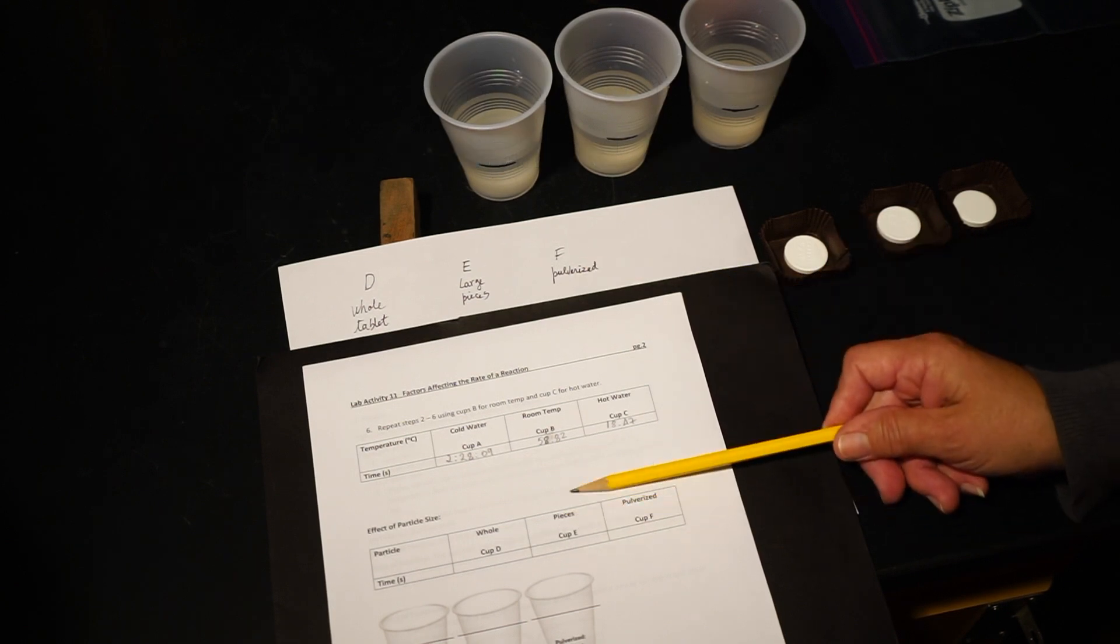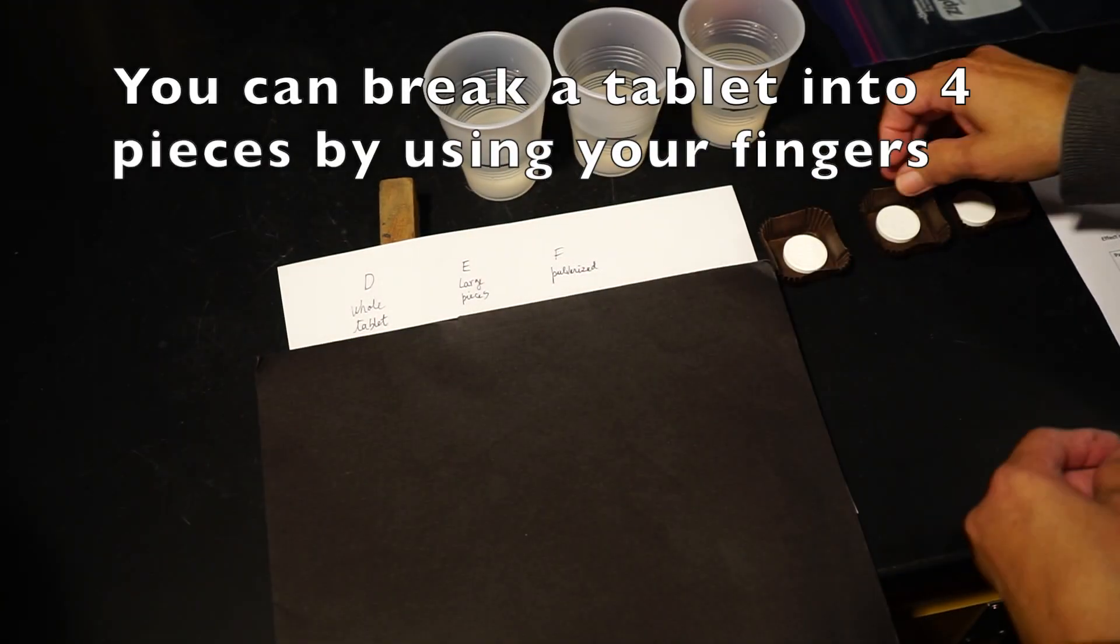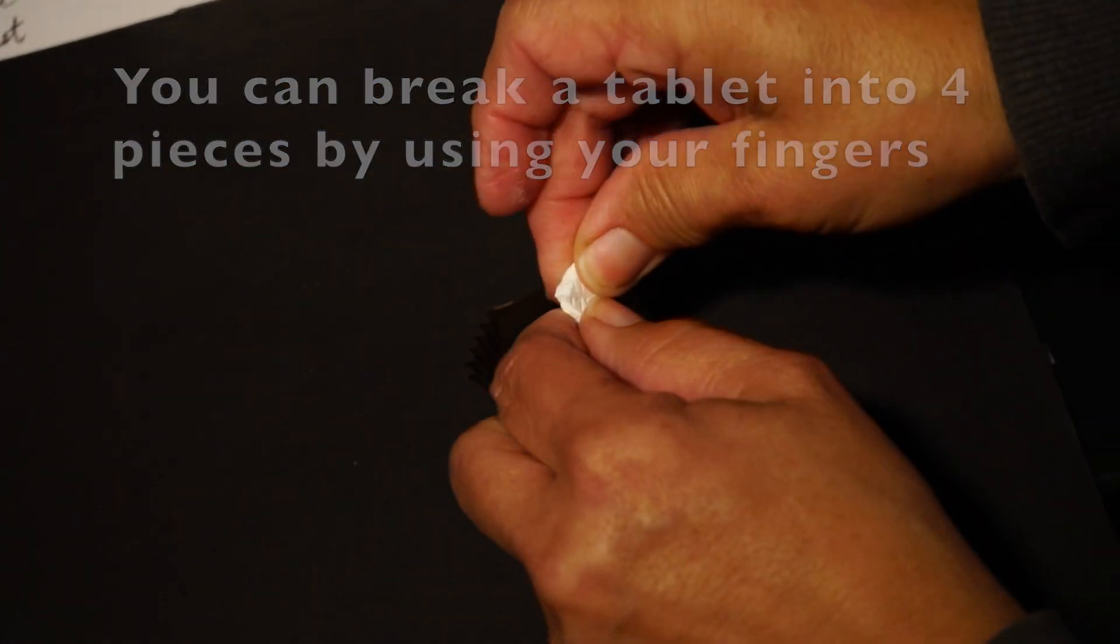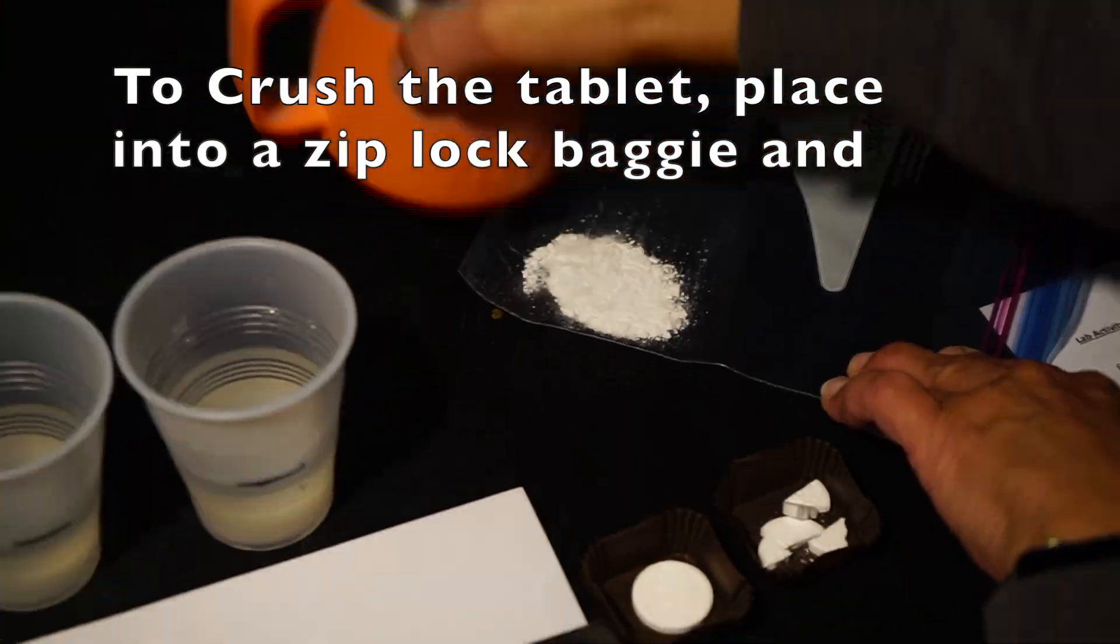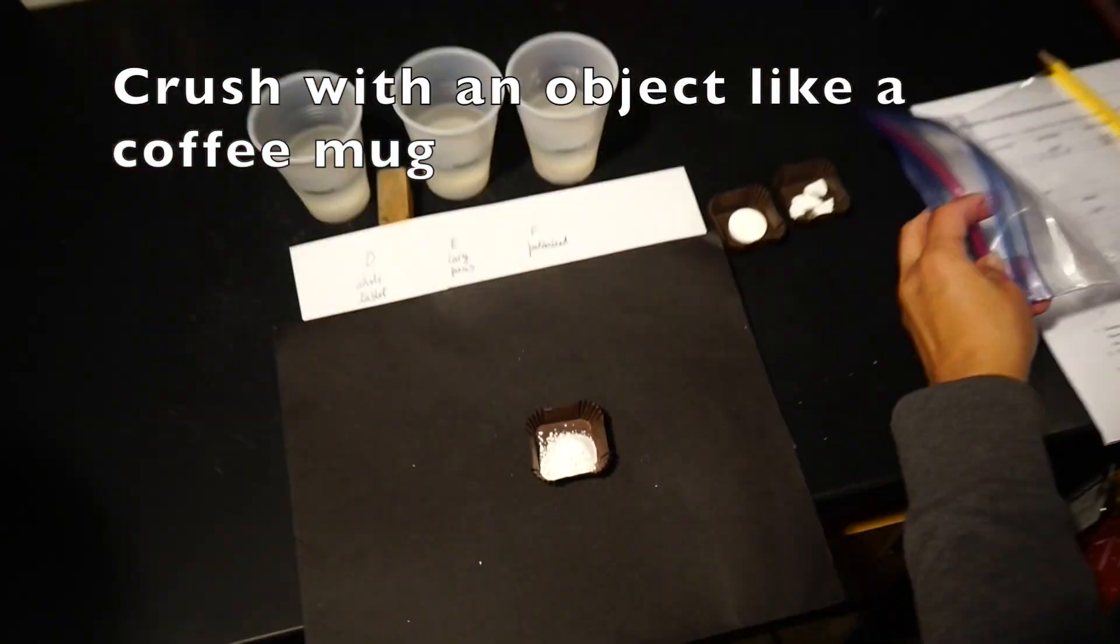You can break the tablet into four pieces by just breaking it in half with your fingers. To crush the tablet into powder, you can place it in a ziploc baggie and crush it with an object like a coffee mug.